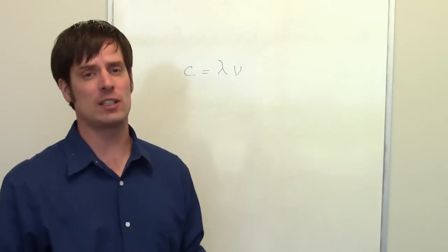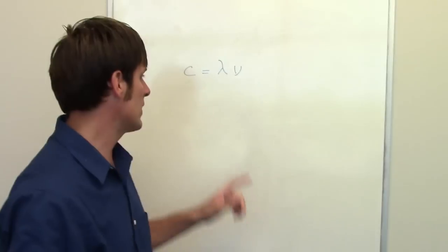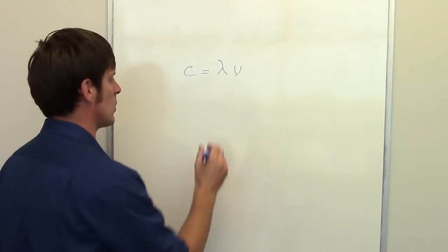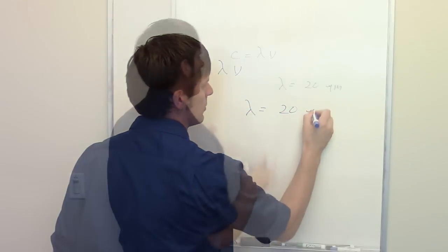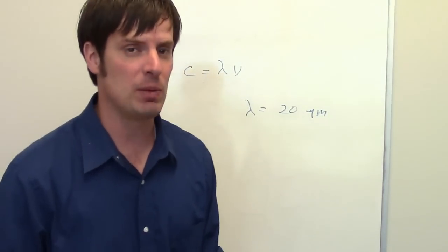That equation is only possible, of course, because all forms of electromagnetic radiation travel at the same speed, the speed of light. We're given our wavelength as being equal to 20 micrometers.